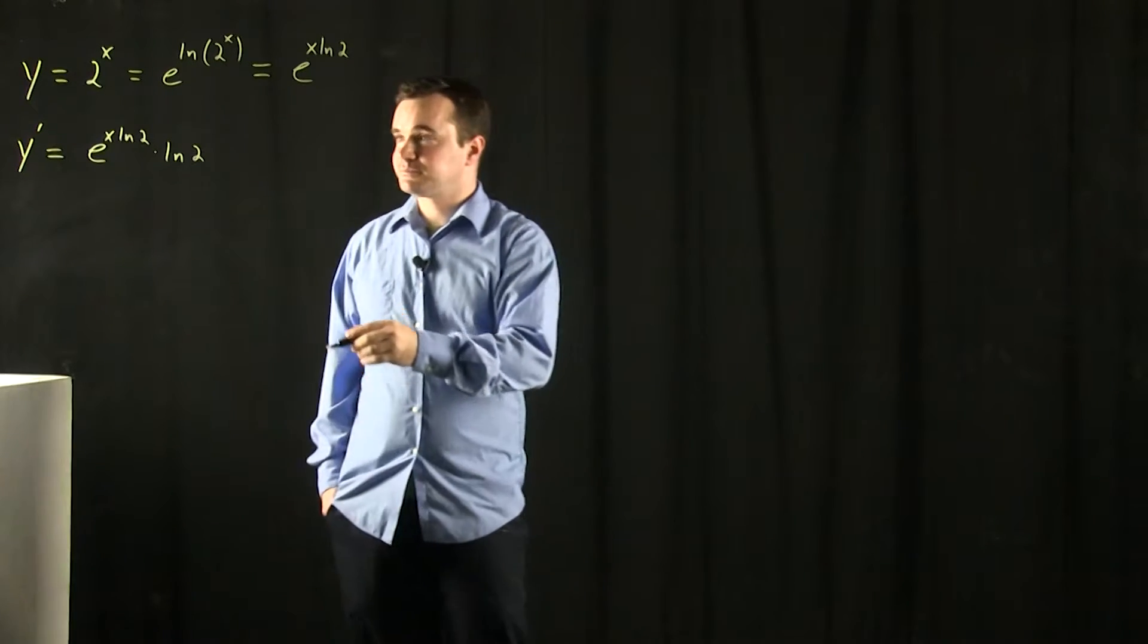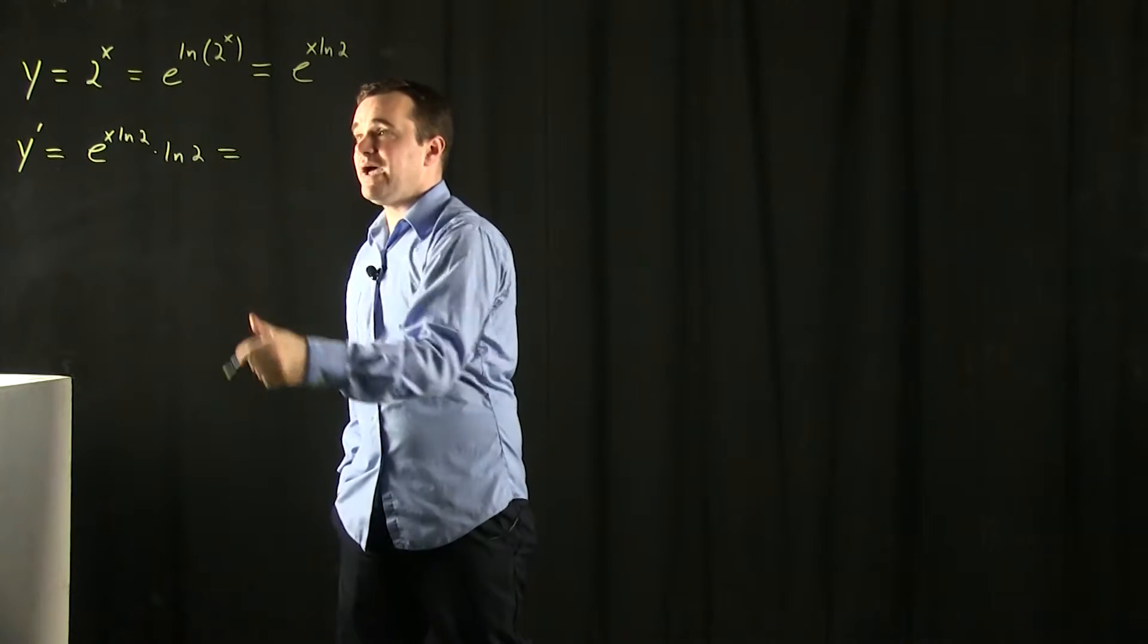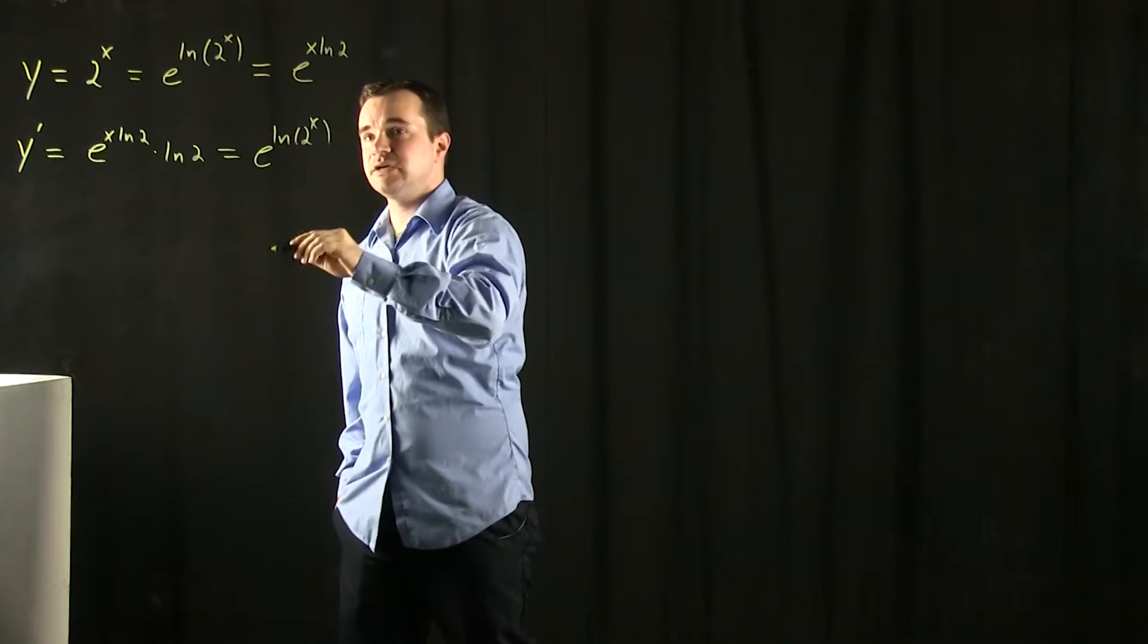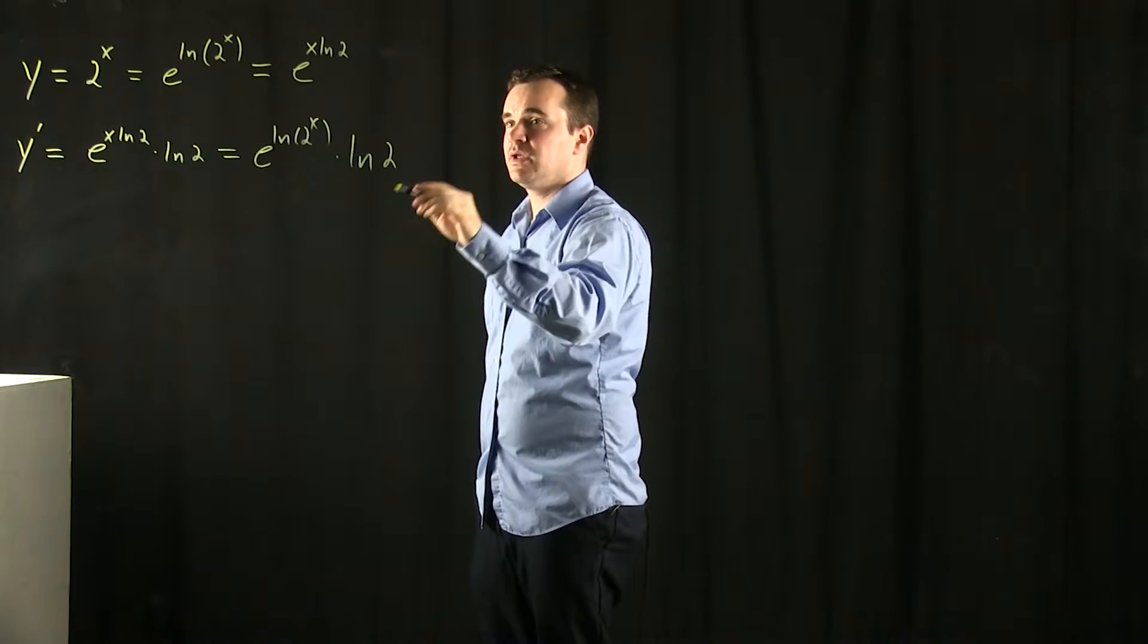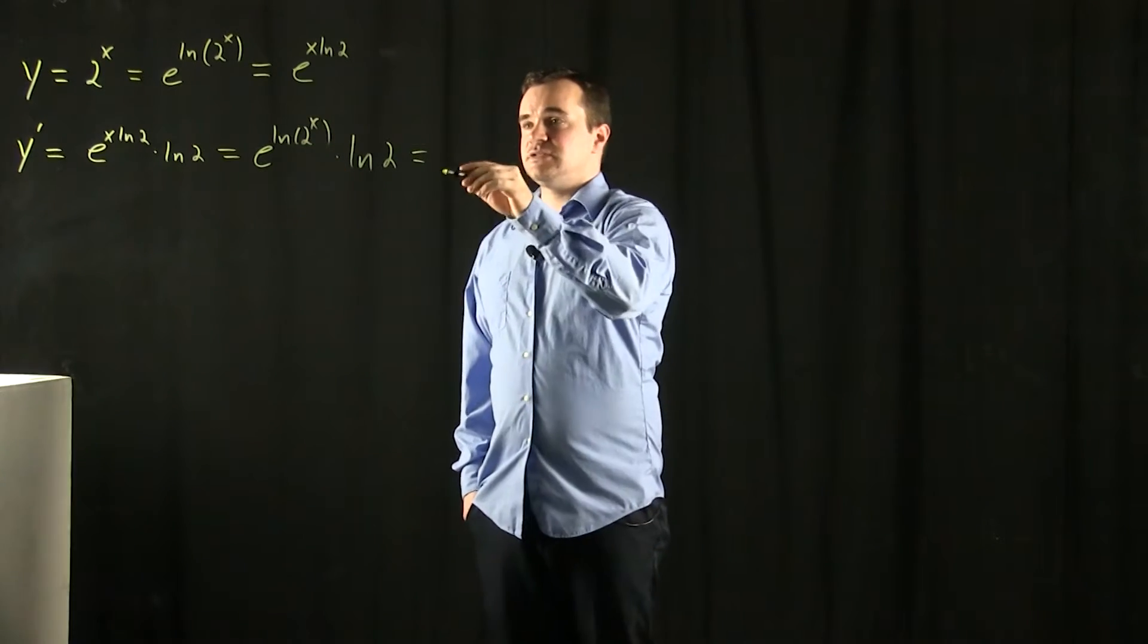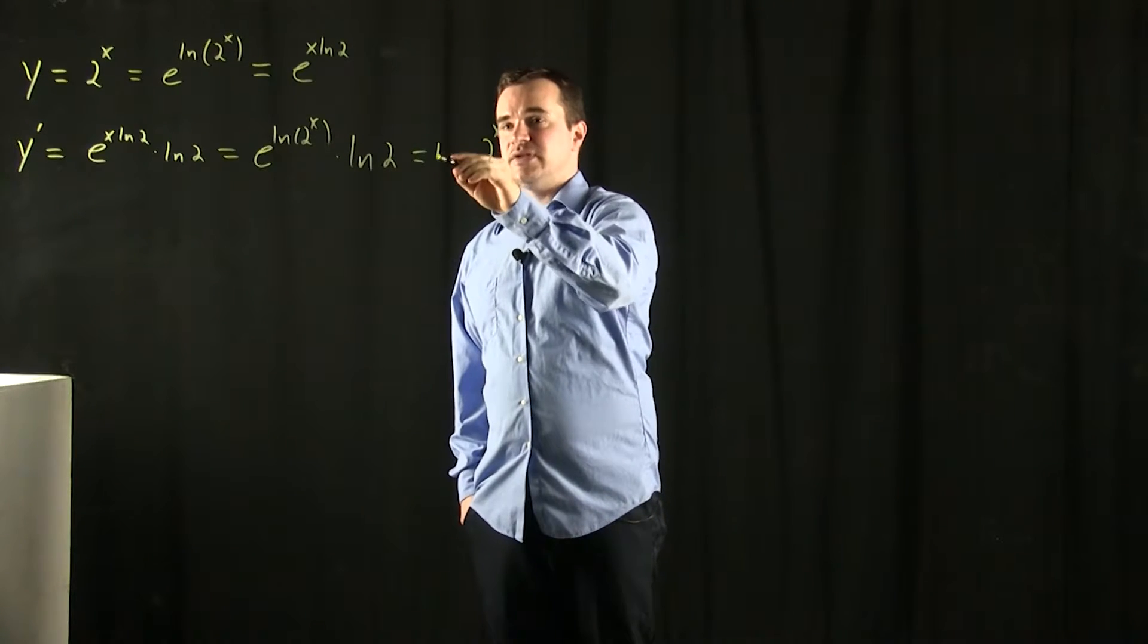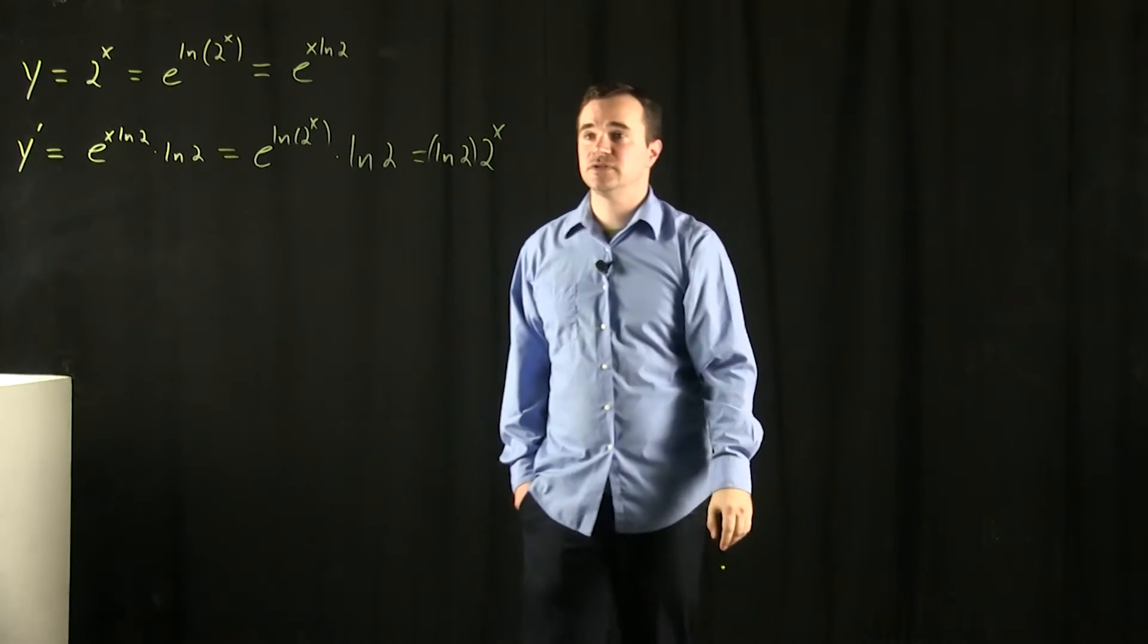Let's clean it up and make it more presentable. I want to bring this x back up into the exponent, e to the natural log 2 to the x, everything times natural log of 2. And e to the natural log of 2 to the x, that's just equal to 2 to the x. And I'm multiplying it by natural log of 2. We like to write those constants in the front of the function.